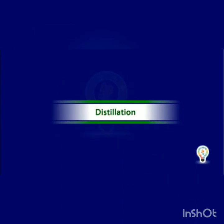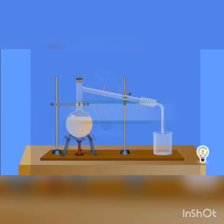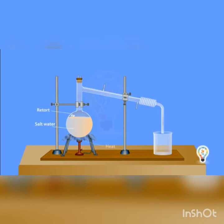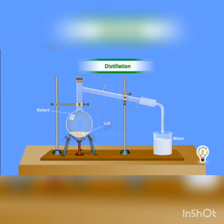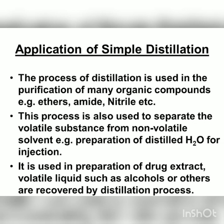Distillation is a method of obtaining pure liquid from a solution by heating it so that the liquid evaporates. In this experiment, salt water is placed in a retort and heated until steam comes out. The steam is collected inside a beaker as droplets of water, while the salt is left behind in the retort. This separation of soluble solids from liquids is called distillation.